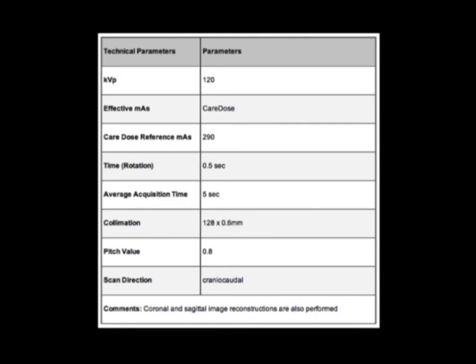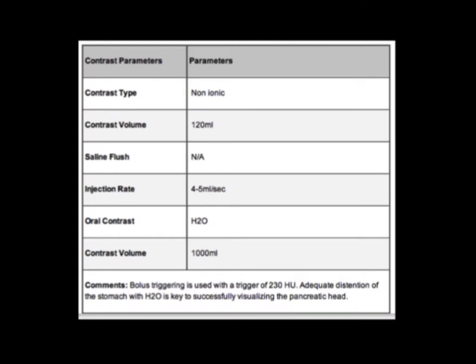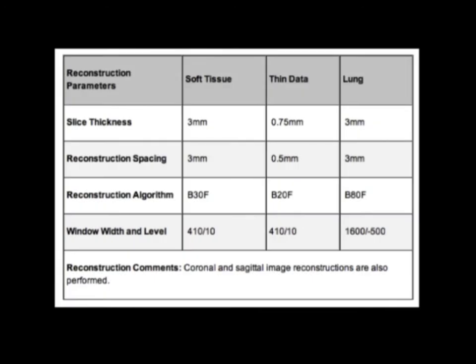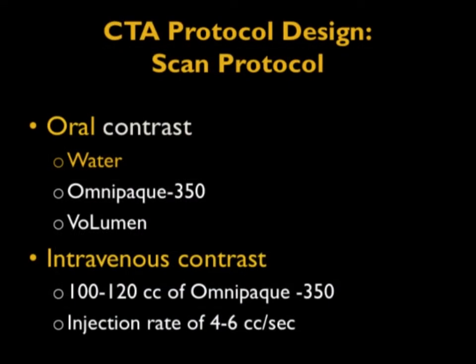We also speak about the contrast: how much, what type, what's the injection rate. JCO is going to require this from all of you — you need to have it available, so you might as well get started now. Things like slice thickness, reconstruction spacing — everything is there. It needs to be built in. You don't want to be changing things from physician to physician, from radiologist to radiologist. You want to make sure you do the same protocol 24-7, 365.